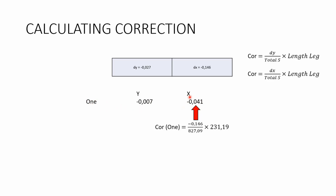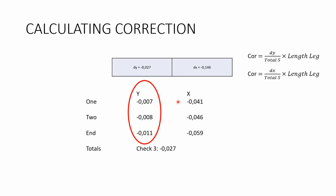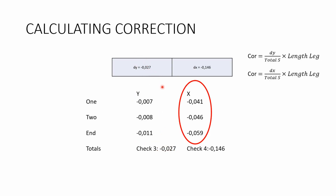For the X correction we do exactly the same, but use the dx value instead. We repeat this for each direction until we have Y and X corrections for every leg. As a check before continuing: if you sum all the Y corrections, the total should equal your dy value (Check 3). Similarly, summing all the X corrections should equal your dx value (Check 4), confirming the calculations are correct.